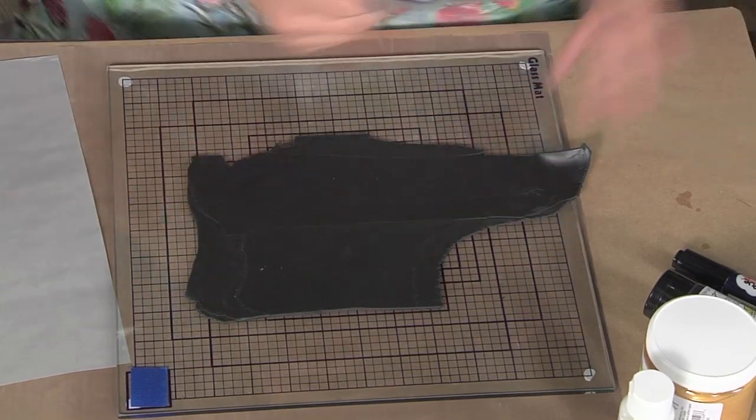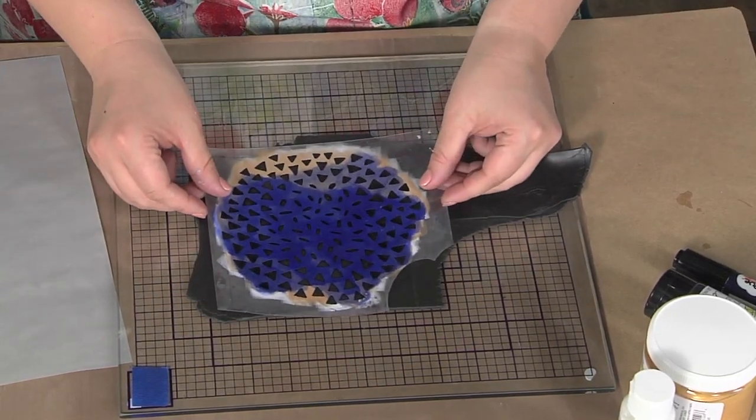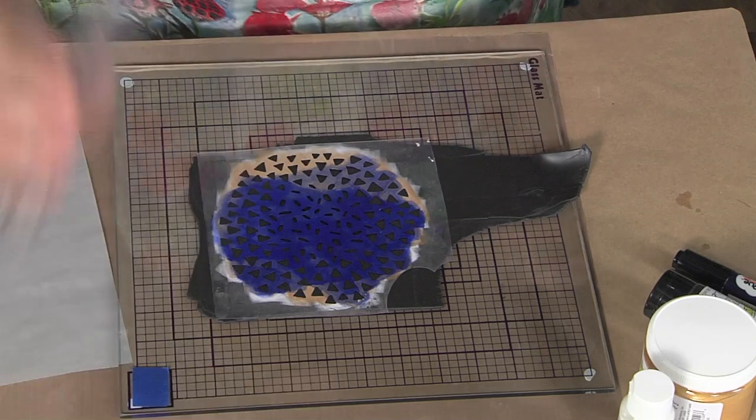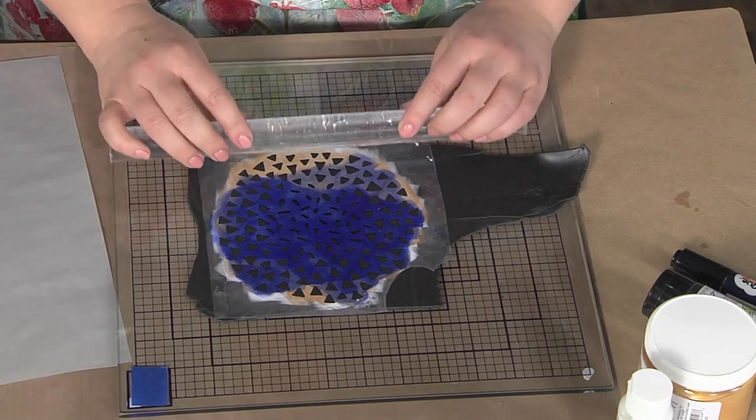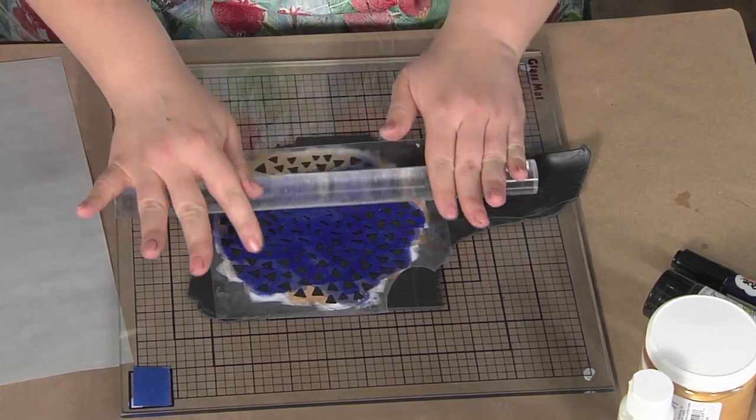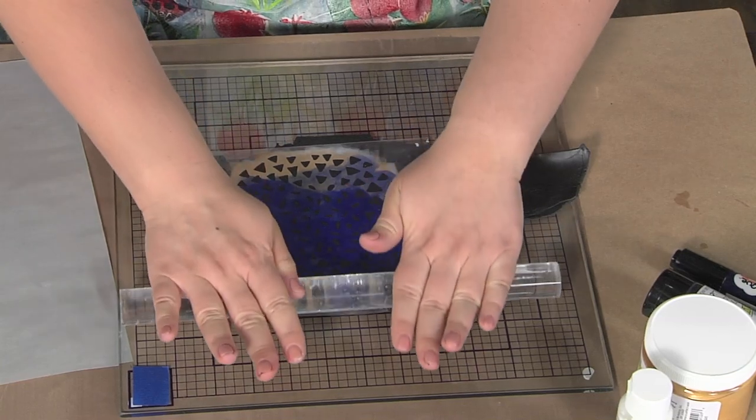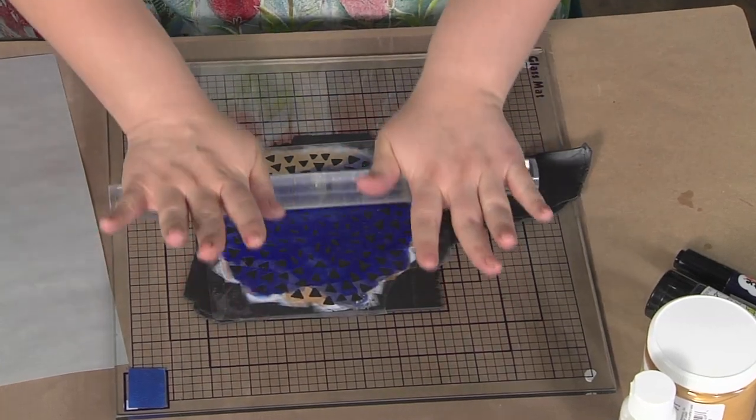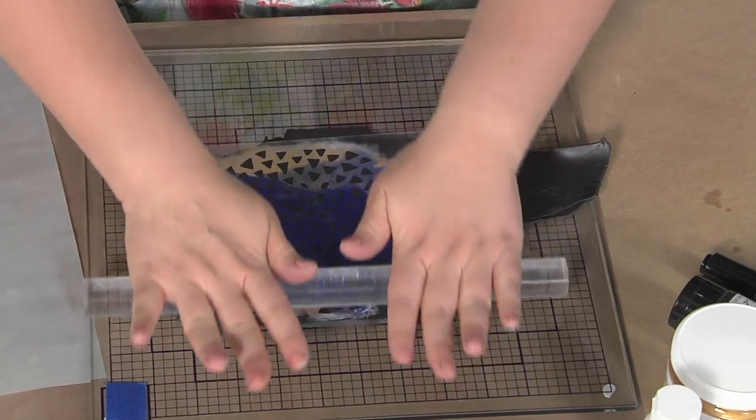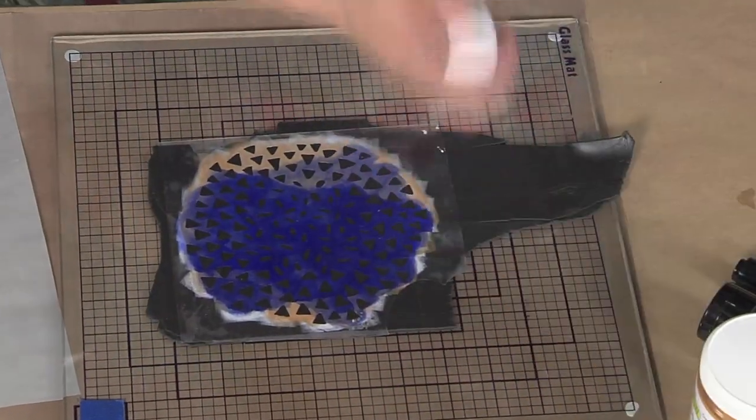I have my stencil which is already done. And now this is that old-fashioned way of doing it but it makes a great impression. Which is I'm just going to roll on over. And you'll recall that I talked about two different finishes. So if you wanted it to just be plain you could stop right here.